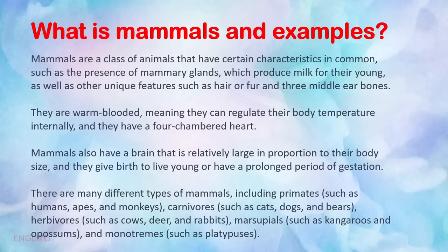There are many different types of mammals, including primates such as humans, apes, and monkeys; carnivores such as cats, dogs, and bears; herbivores such as cows, deer, and rabbits; marsupials such as kangaroos and opossums; and monotremes such as platypuses.